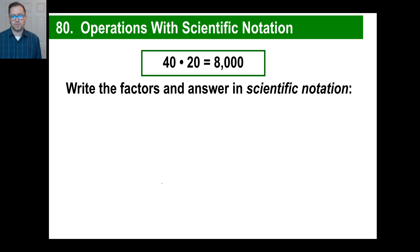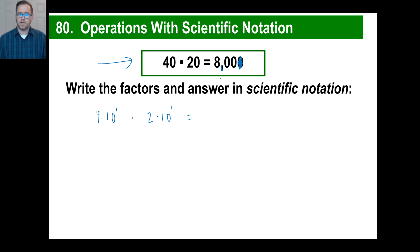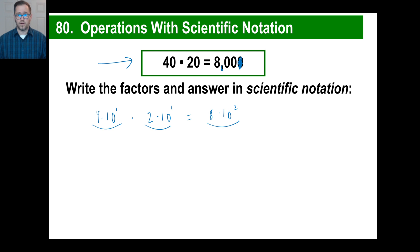Now let's look at the same thing in scientific notation. 40 times 20 is 800. Let's write 40 in scientific notation: that's 4 times 10 to the first. Times 20, which is 2 times 10 to the first. That equals 800, and how do you write 800 in scientific notation? It's 8 times 10 to the second.